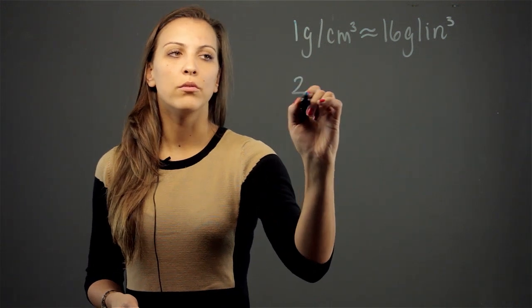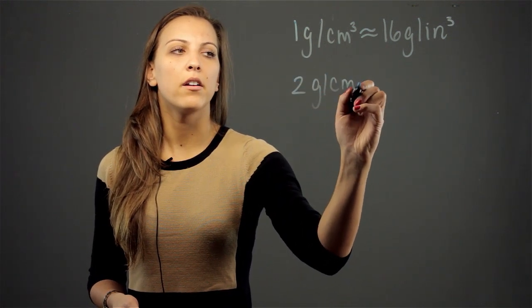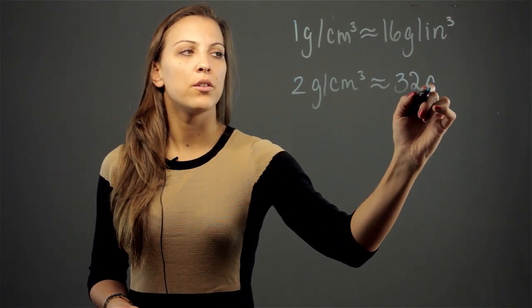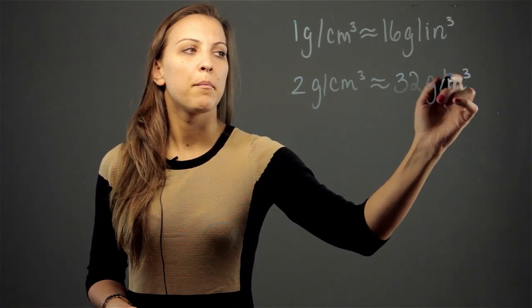So let's say that we had 2 grams per cubic centimeter. All we're going to do is multiply the 16 by 2, so we get approximately 32 grams per cubic inch.